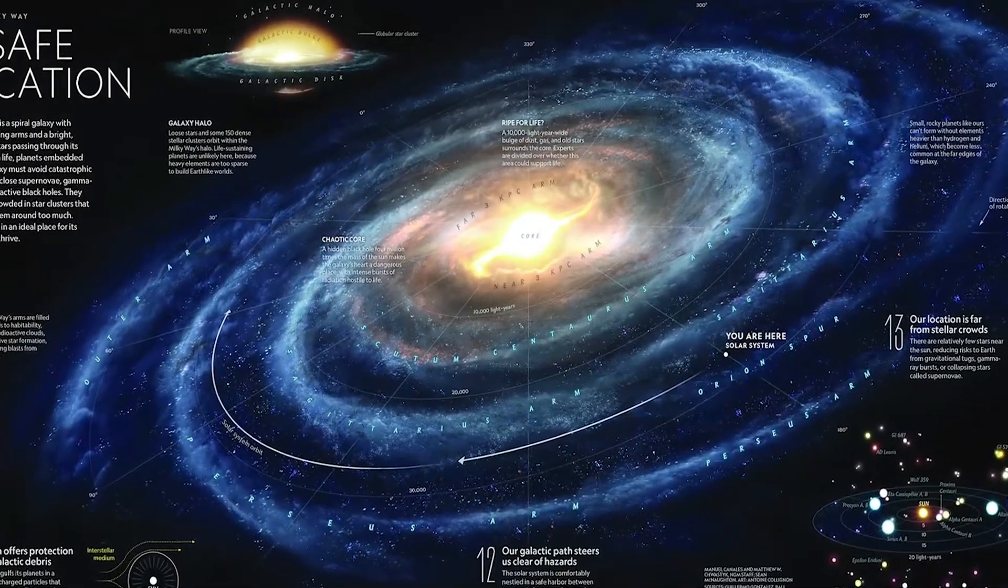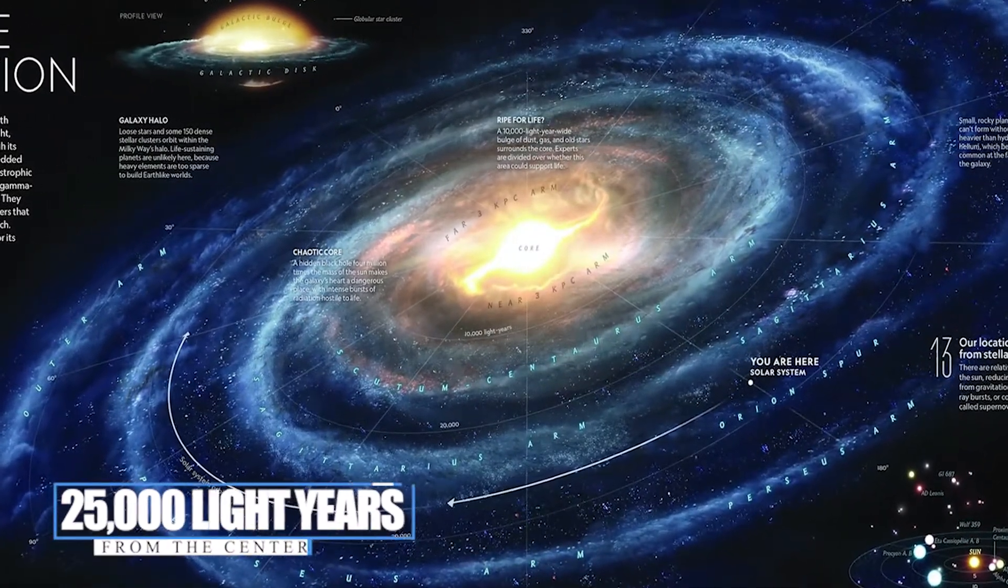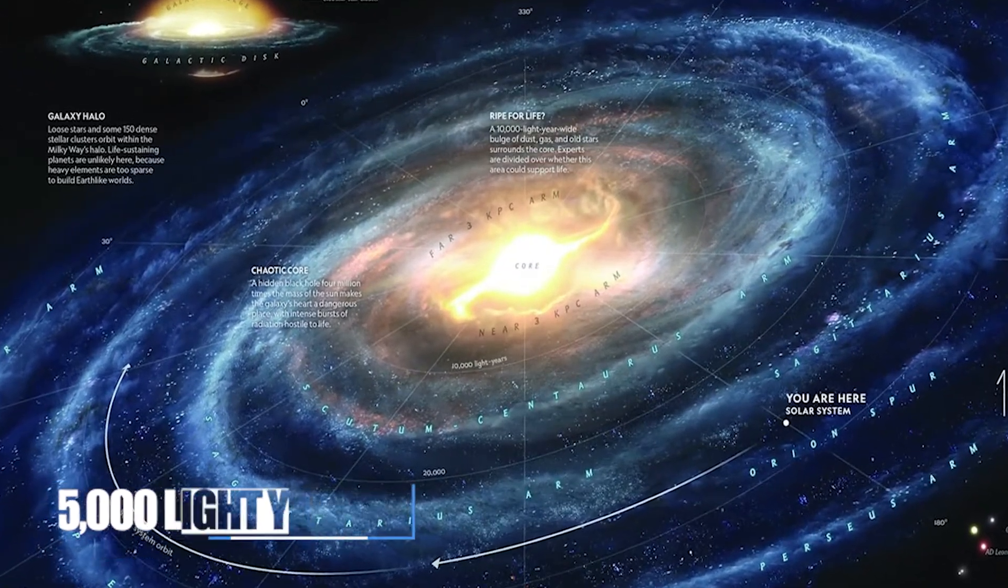On this sumptuous disk, our meager solar system lies on the inner edge of an arm, about 25,000 light-years from the center.